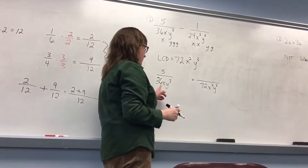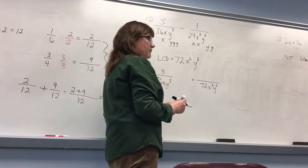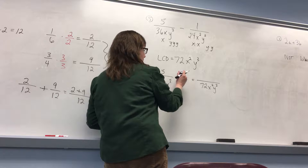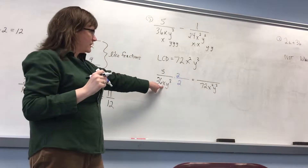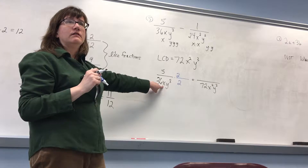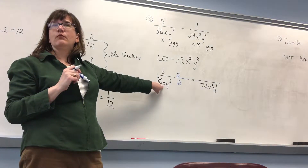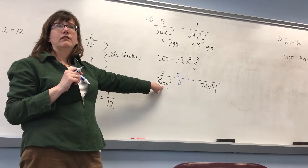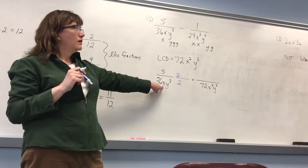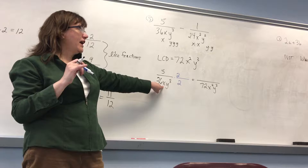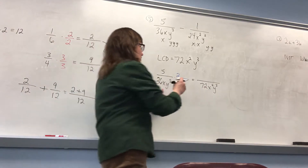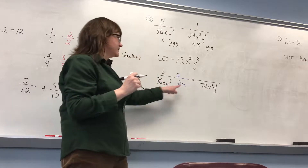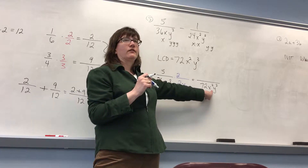What's missing from here? How do I get 36 to 72? Multiply it by 2. How do I get from x to x squared? Do I need to multiply any more x's in there? Times x. So x is not the same thing as x squared. I need one more x so that x times x will give me x squared.